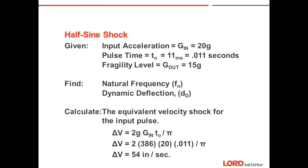Now let's work through a half-sine shock problem. We are given an input acceleration of 20 G's half-sine pulse. The pulse time is 11 milliseconds, which is 0.011 seconds. The fragility level of the item exposed to this shock is 15 G's out. We want to find the required natural frequency and the dynamic deflection at the isolator. First, we calculate the equivalent velocity shock: delta V equals 2 times G times G-in times T sub zero, divided by pi. Plugging in our knowns — 2 times 386 times 20 times 0.011, divided by pi — we get a change in velocity of 54 inches per second.